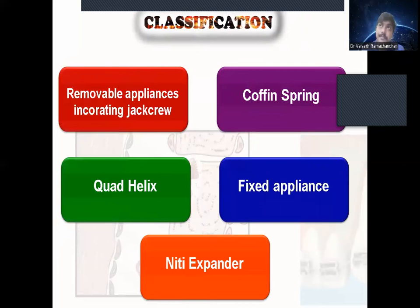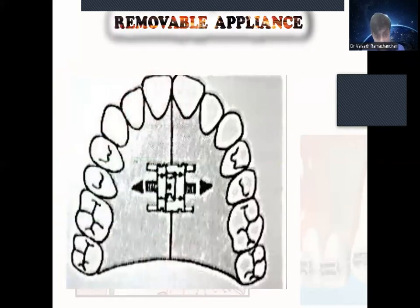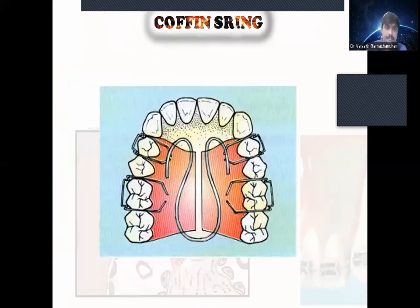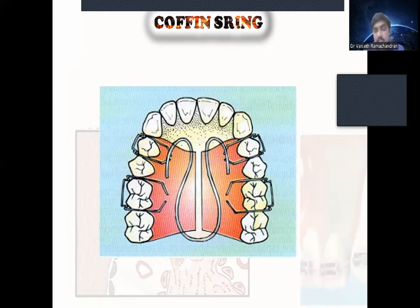The classification of slow expansion includes removable appliances — coffin spring, quad helix — and fixed appliances including the NiTi expander. For removable appliances, we can use jack screws for expansion, but only dentoalveolar expansion is achieved. The coffin spring is an omega-shaped spring; there are two acrylic halves separated by a space, and by activating this omega spring we can get some amount of expansion.